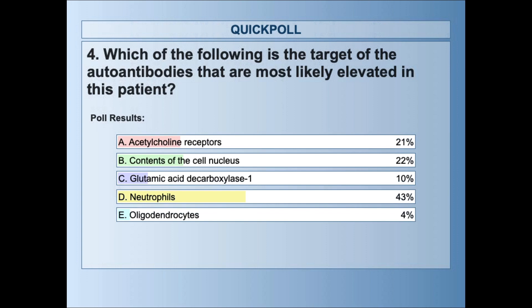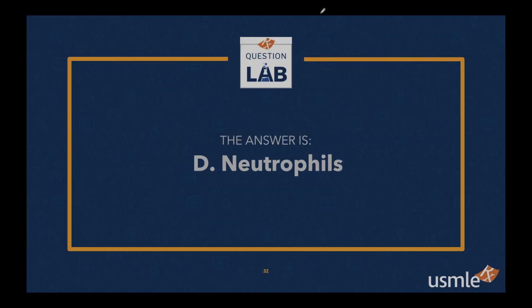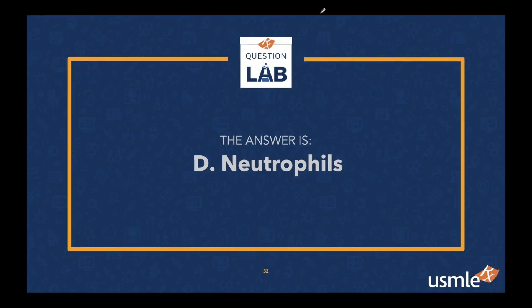Results: 43% selected D — neutrophils — and second place was contents of cell nucleus, followed closely by acetylcholine receptors. The correct answer is indeed D — neutrophils — and 43% got it right. Great job.